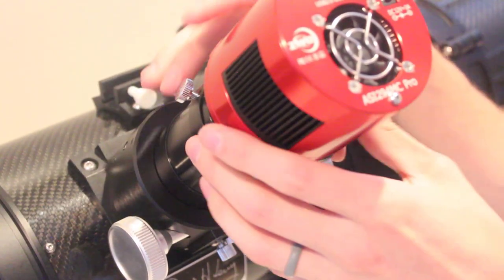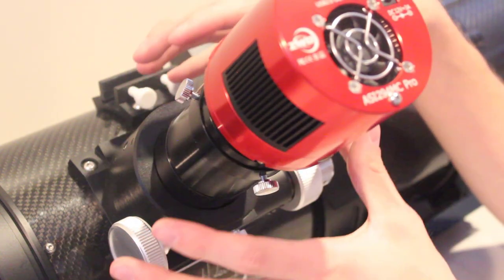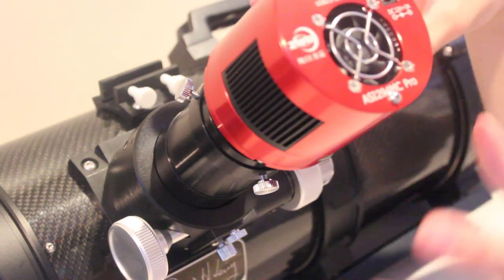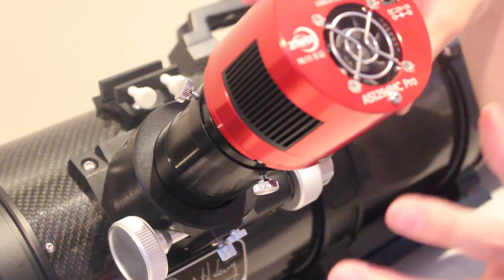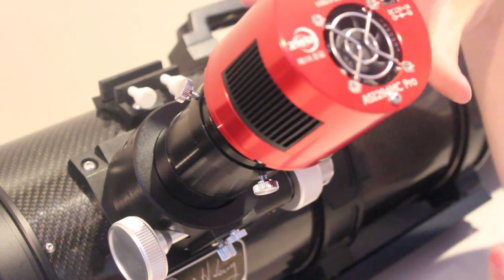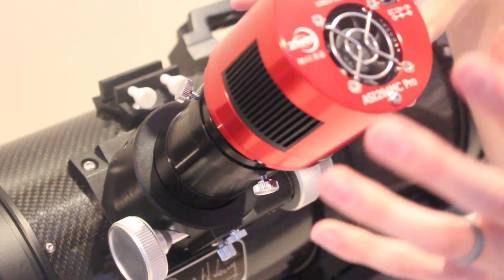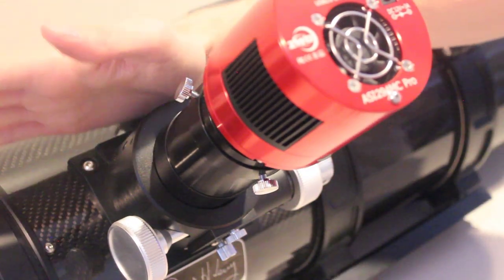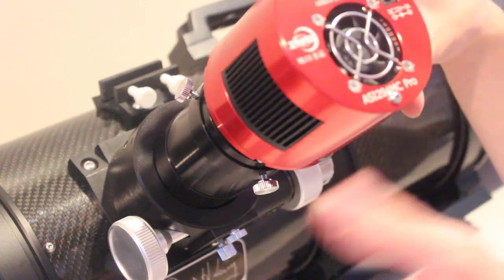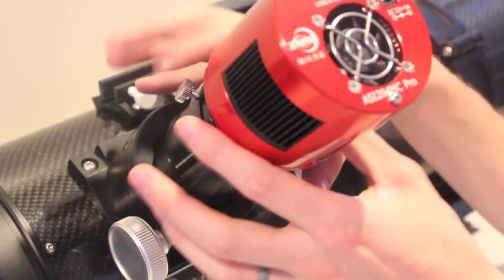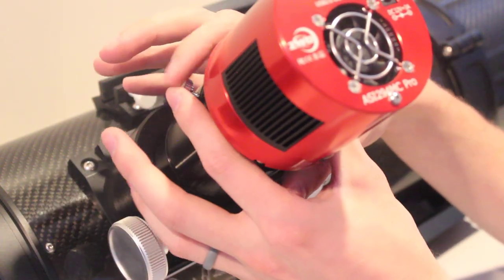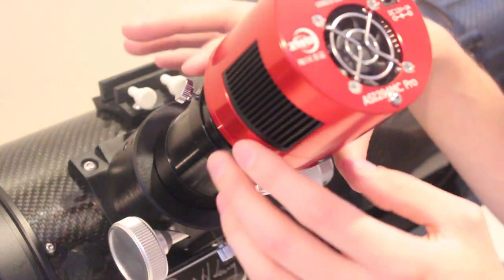Number one, you're going to see that vignetting like I discussed, but number two, this is definitely not a super secure method. So for example, when I start to image and my camera is hanging off the side here, and as the scope rotates throughout the night, it makes me a little nervous that the compression ring is going to hold it all in. So keep that in mind when you're using this method.